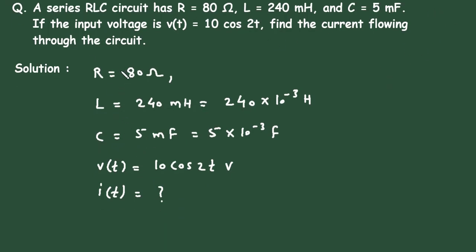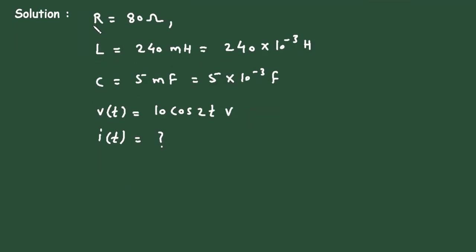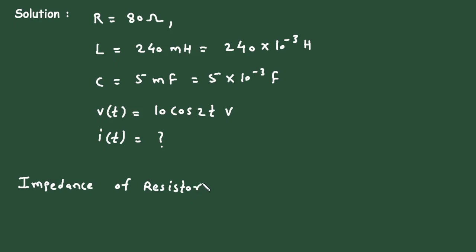First, we have to find the total impedance. To find total impedance, we have to find the individual impedance of each circuit element. The impedance of the resistor, let's call it Z1, is equal to only resistance R, so it will be 80 Ohm.